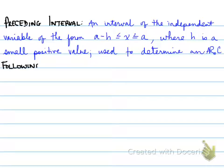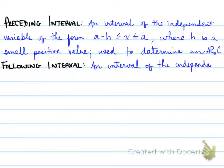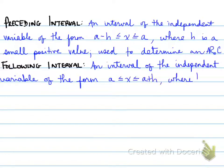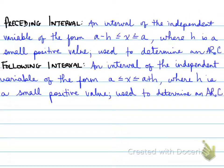The following interval is an interval of the independent variable of the form a to a plus h, where h is a small positive value used to determine an average rate of change. Here, what we're looking for is an interval of h that is 0.001 after the given value a.